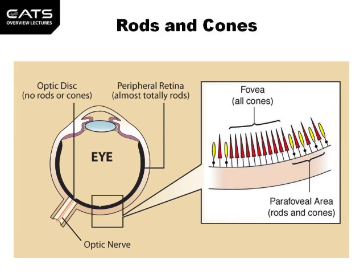Directly behind the lens at the back of the eye, where light rays converge at a focal point, is an area known as the fovea. This contains cones, which are a type of photoreceptor that respond to colour vision, are able to resolve two dots for example whether they are close together, and are responsible for acuity.